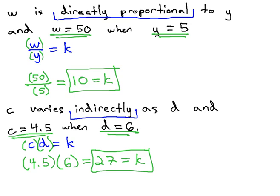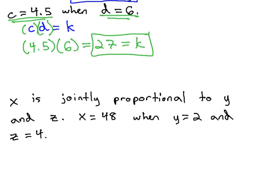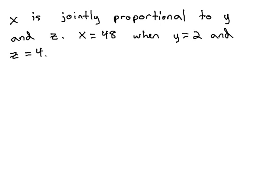One other type of variation we looked at was joint variation or jointly proportional. Let's see if we can find a jointly proportional constant. Here, we see the key phrase that tells us our equation that x is jointly proportional to y and z.